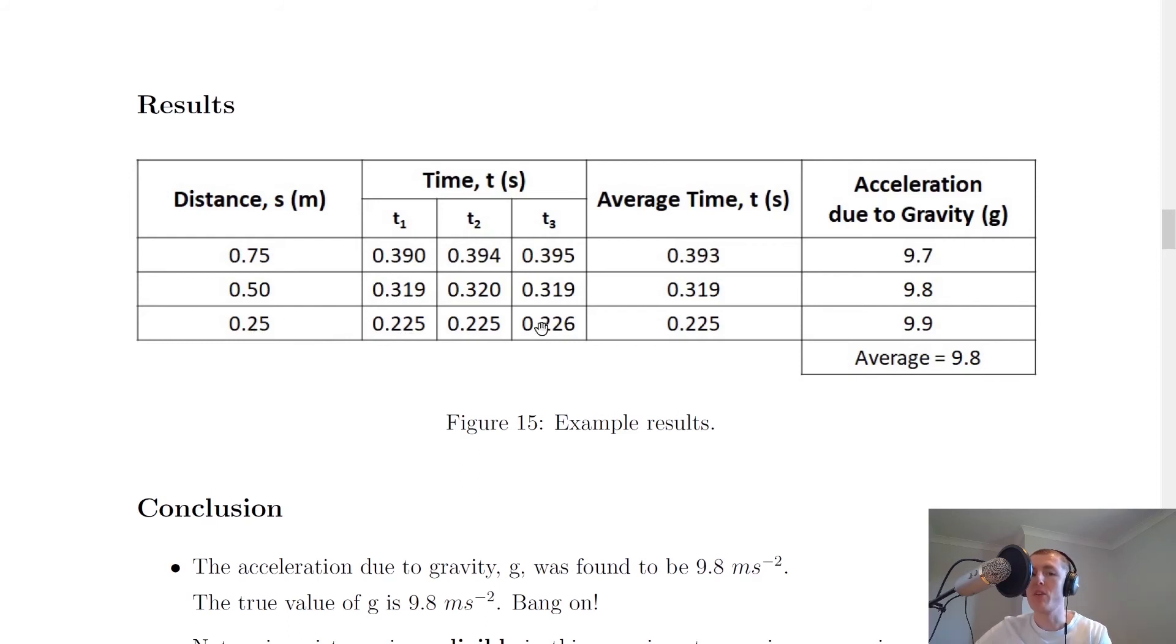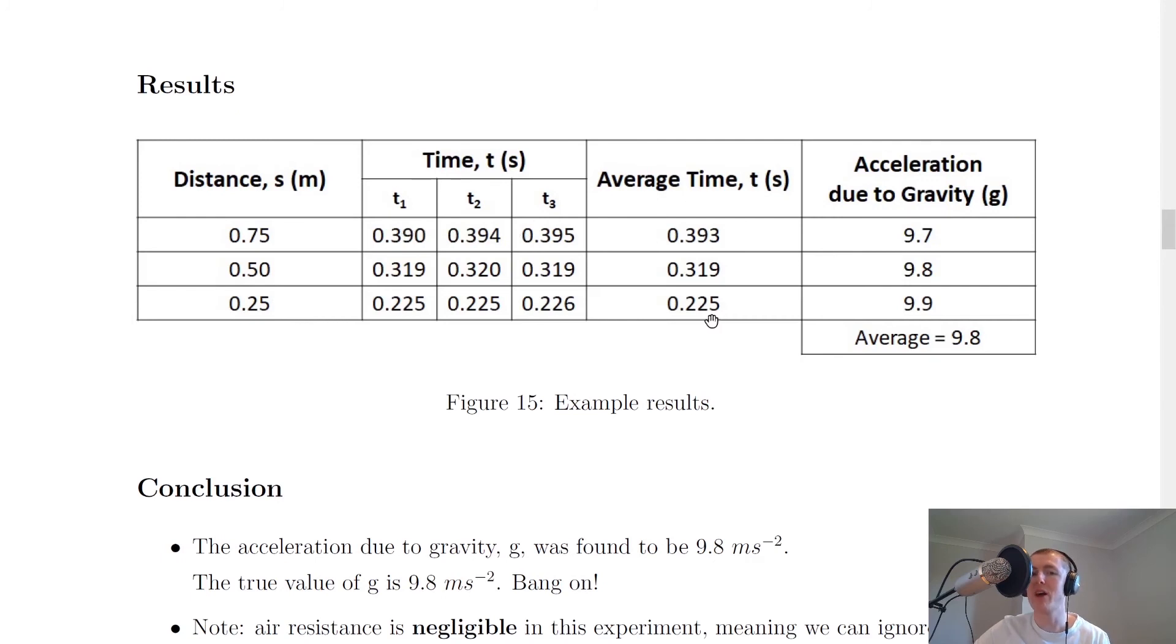So at 0.25 meters, we got these three results. At 0.50 meters, we got these three results. And at 0.75 meters, we got these three results of time. Now notice the trend that as we increase in height from 0.25 to 0.5 to 0.75, the time taken for the ball to drop should be longer. And that makes sense. The higher up something's got to fall, the longer it's going to take to fall.